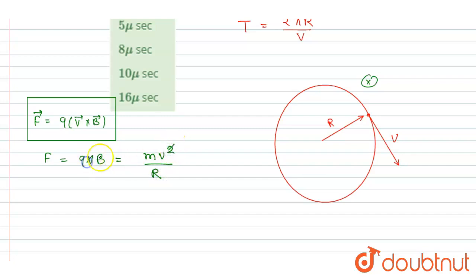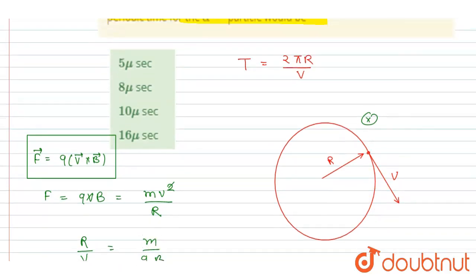r by v equals m by qB. So put it here in this expression: r by v equals m by qB.